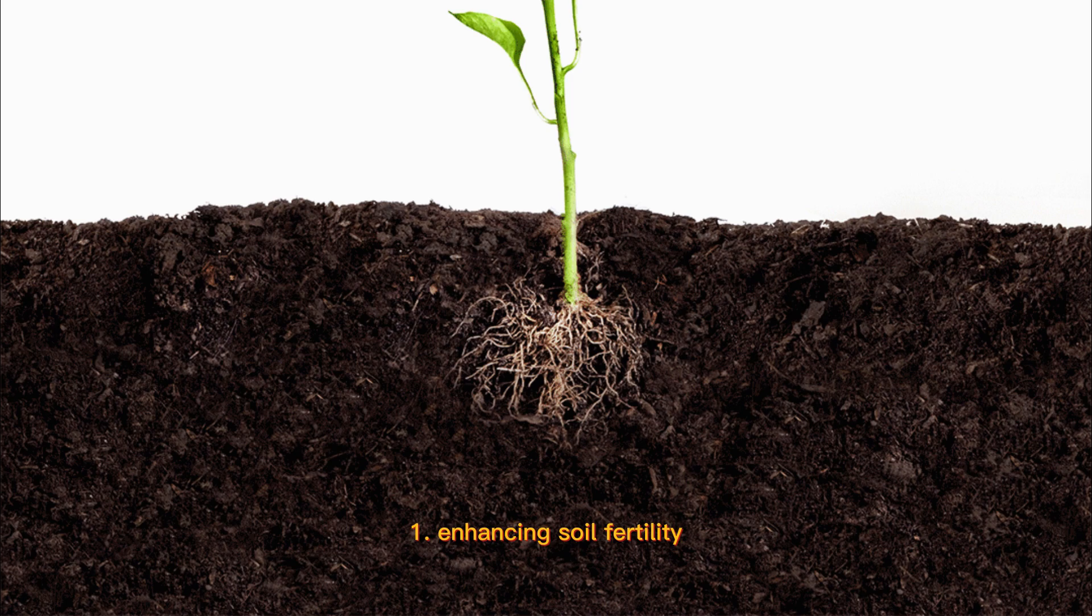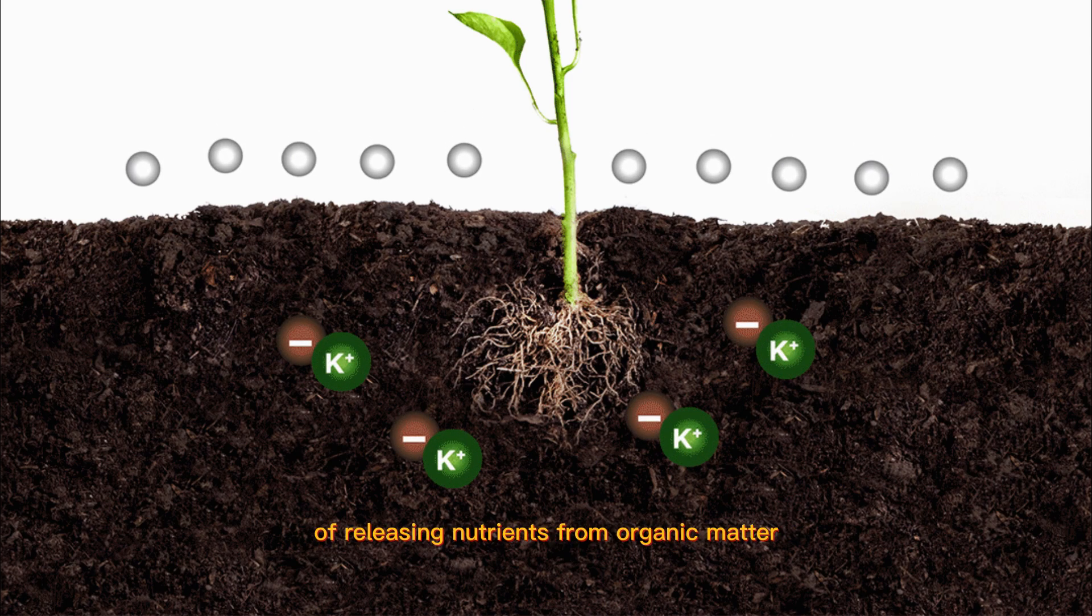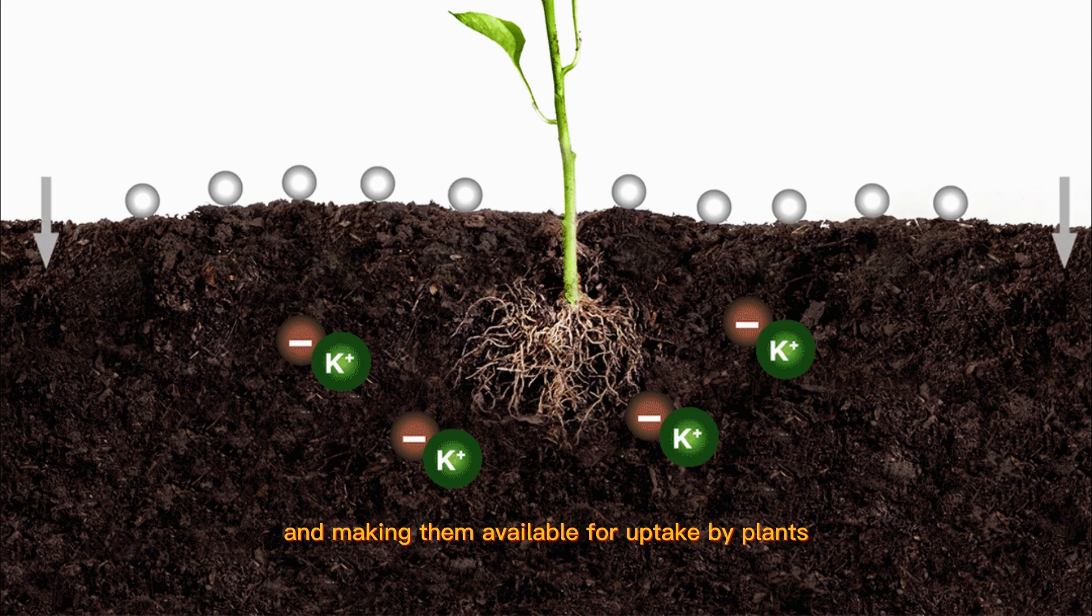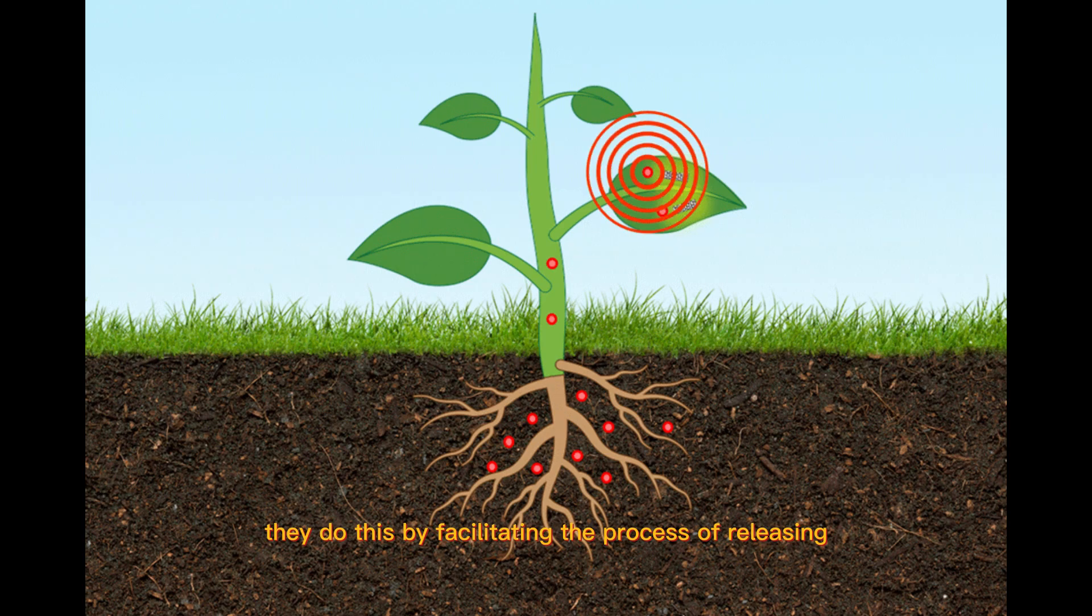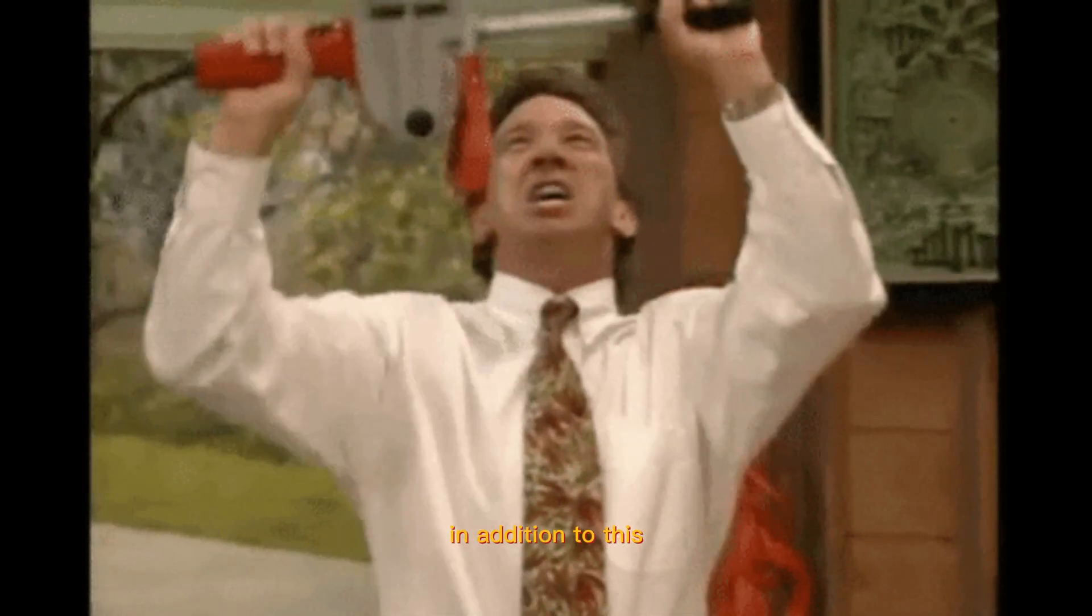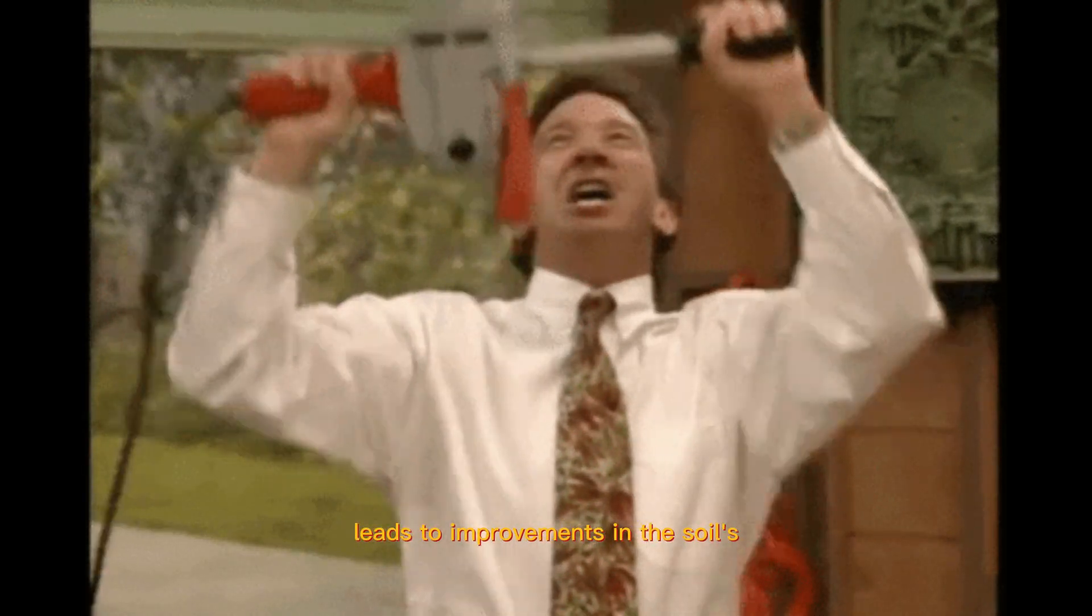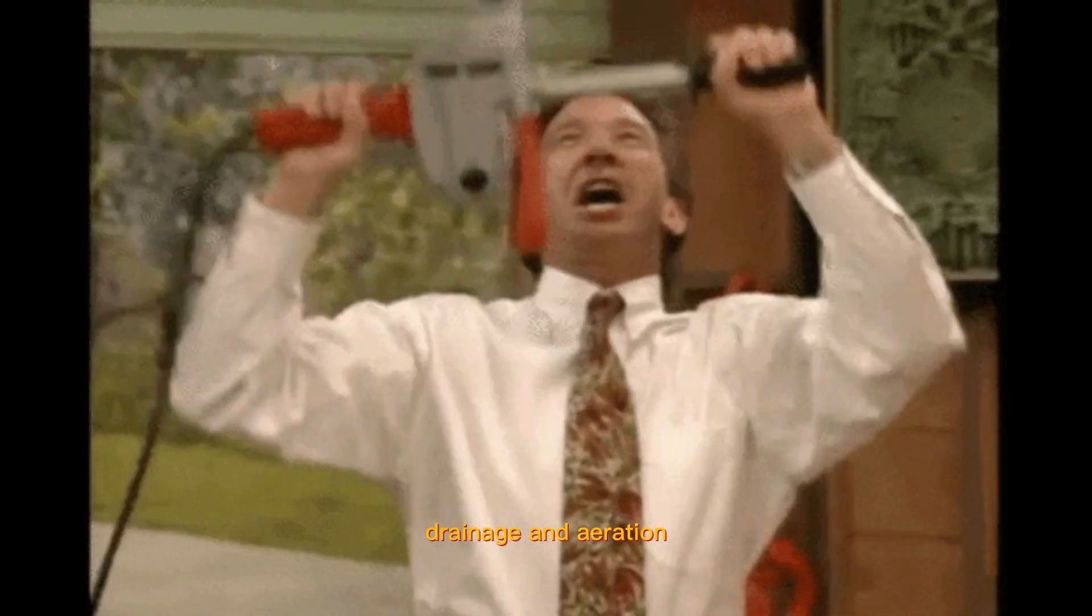1. Enhancing soil fertility. Microbes play an important part in the process of releasing nutrients from organic matter and making them available for uptake by plants. In addition to this, they help to improve the structure of the soil, which in turn leads to improvements in the soil's drainage and aeration.